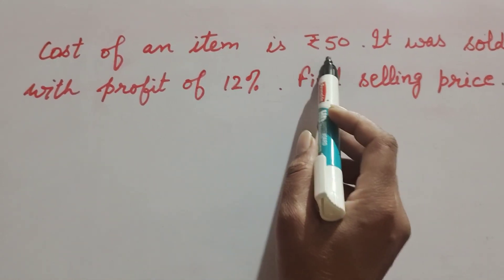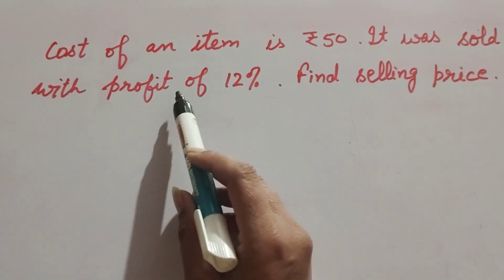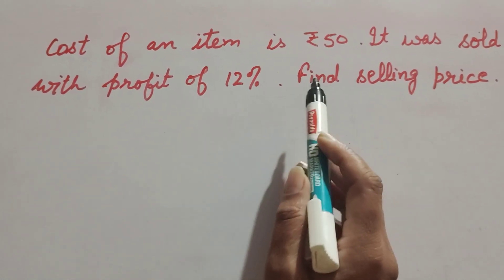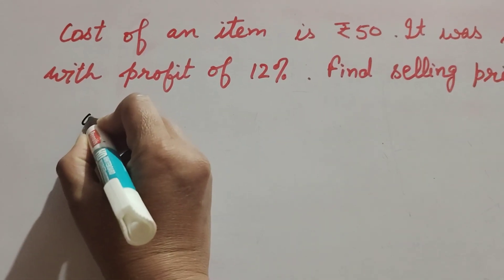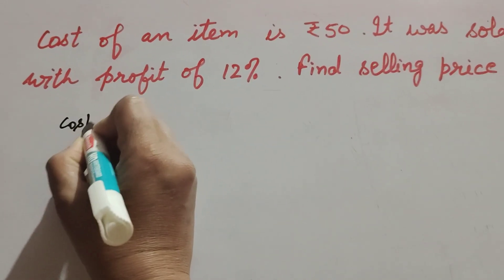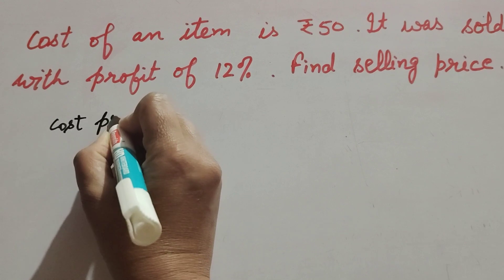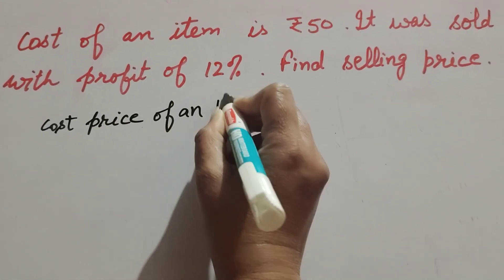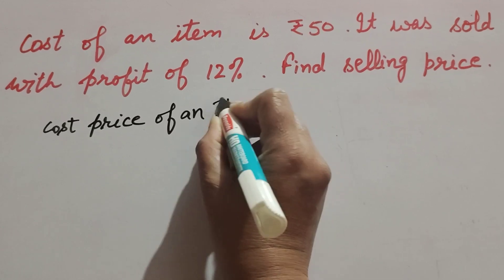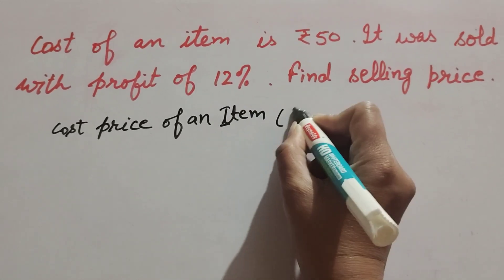Cost price of an item is given as ₹50, and it is sold with 12% profit. We need to find its selling price. Cost price of an item, CP, is equal to ₹50.